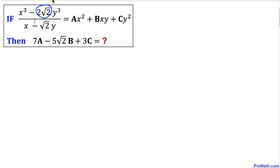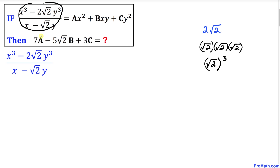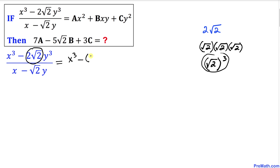Let's focus on 2√2 first. The 2 can be written as √2 times √2, and then multiplied by the other √2, giving us √2 to the power of 3. So the numerator on the left-hand side can be written as x³ minus (√2)³ times y³.